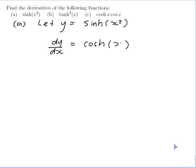But it's not x, it's x². The chain rule says to multiply by the derivative of what's inside. The derivative of x² is 2x, so the answer is 2x cosh(x²).